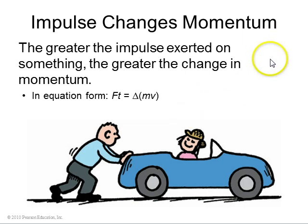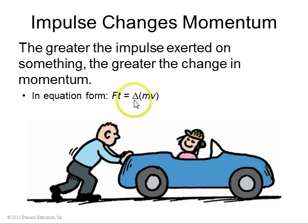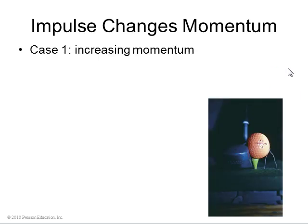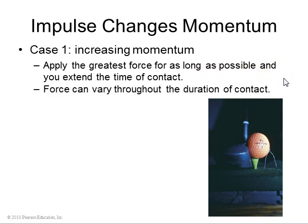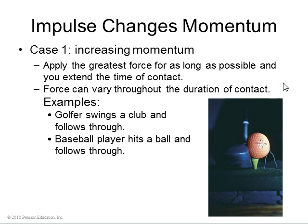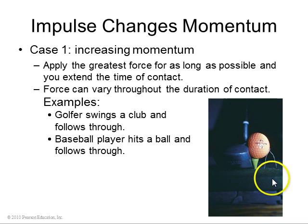The greater the impulse exerted on something, the greater the change in momentum. The equation for that is sometimes called the impulse-momentum theorem: impulse equals delta mv, or the change in mv, where m times v is the momentum. So if you want to increase something's momentum, you want to apply the greatest force for as long as possible, extending the time of contact — that t in f times t. This is why you follow through in both golf and baseball. When you follow through with your swing, you are applying your force for a greater amount of time to the ball, and so you change its momentum by even more.